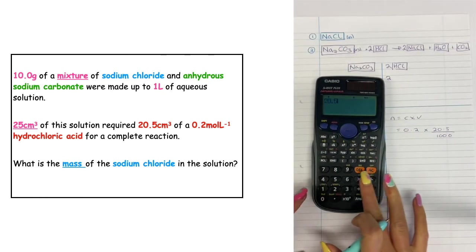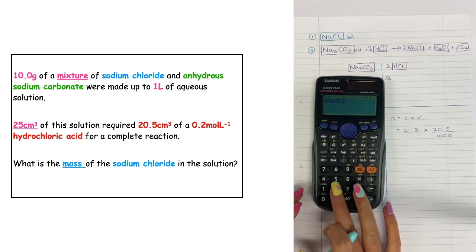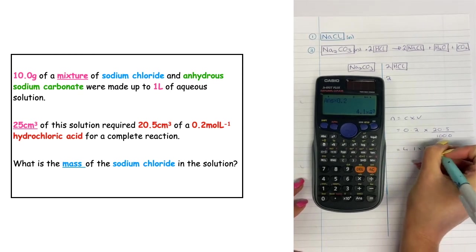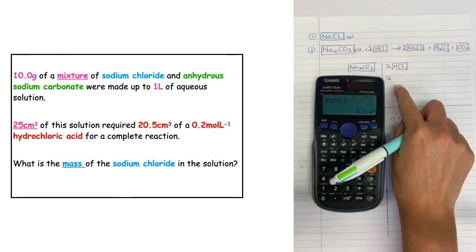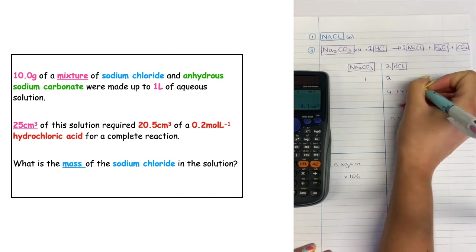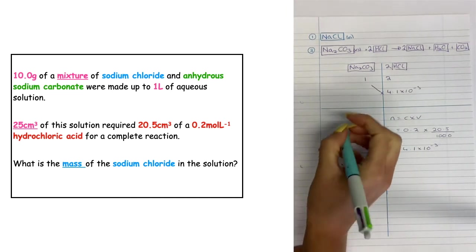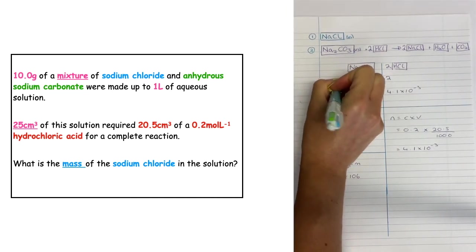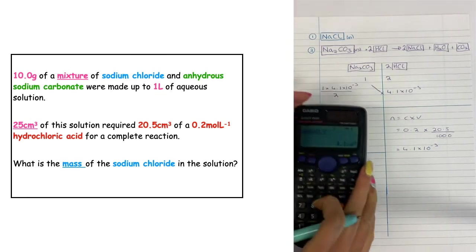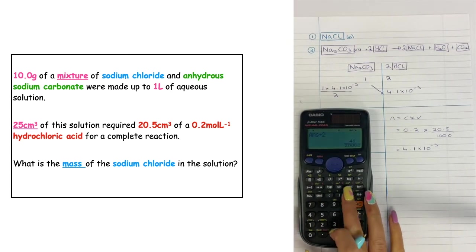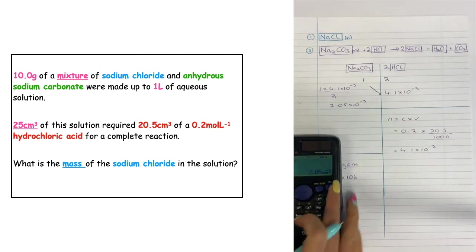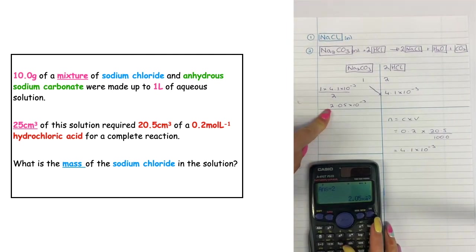Gives me 4.1 times 10 to the minus 3 moles. I then need to mole ratio, so I need to scale for the actual number of moles. 4.1 times 10 to the minus 3, and I'll cross multiply to scale that across. That means I would do 1 times 4.1 times 10 to the minus 3, and I need to divide it by 2 to proportionalize. Divide by 2. That gives me 2.05 times 10 to the minus 3 moles of my sodium carbonate that reacted in that titration.